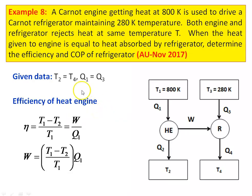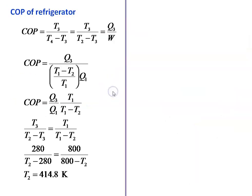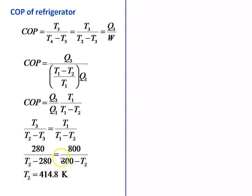Substituting W equal to (T1 minus T2) divided by T1 into Q1, and rearranging: COP equals Q3 by Q1 into T1 by (T1 minus T2). The condition is Q1 equals Q3, so these cancel. The COP in terms of temperature is T3 by (T2 minus T3), giving T3 by (T2 minus T3) equals T1 by (T1 minus T2). Substituting and solving this equation, we get T2 equal to 414.8 Kelvin.